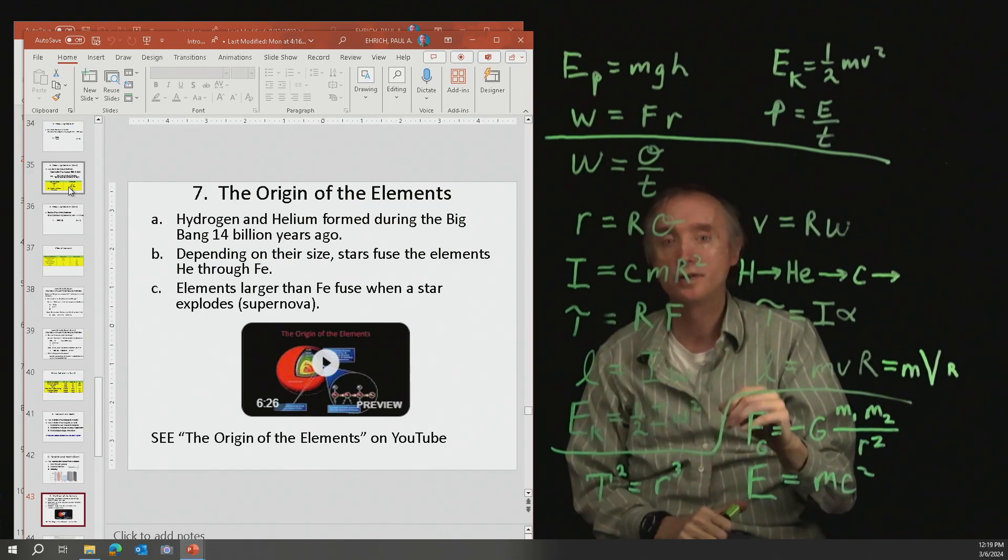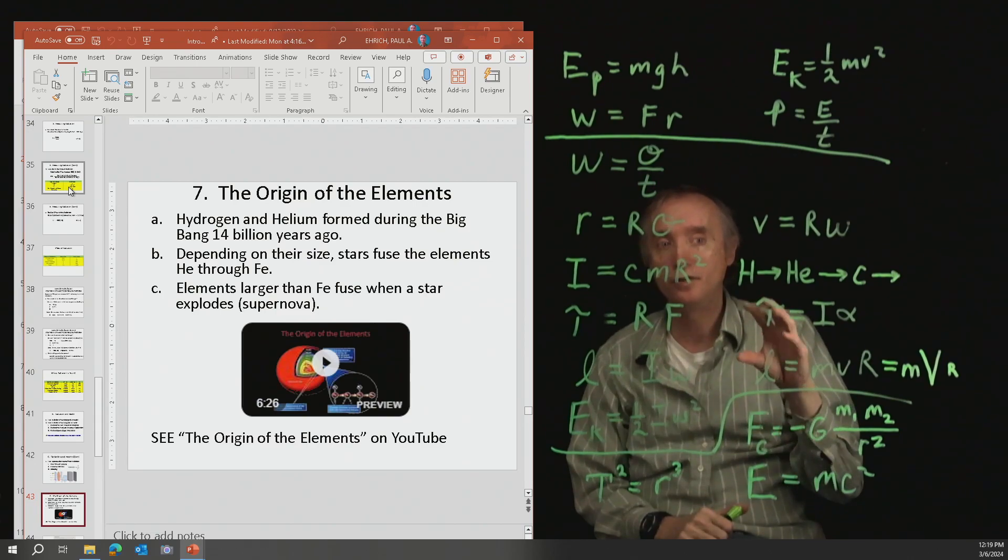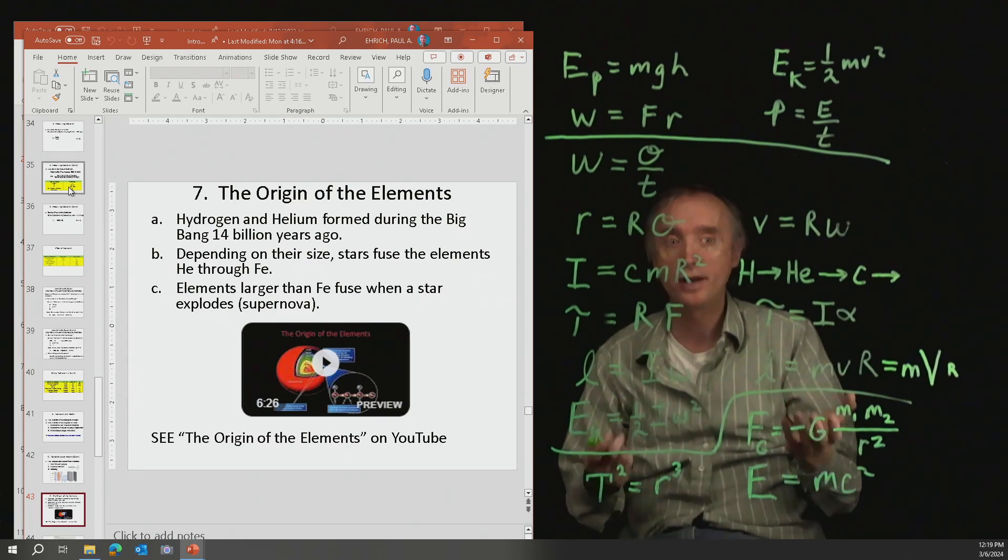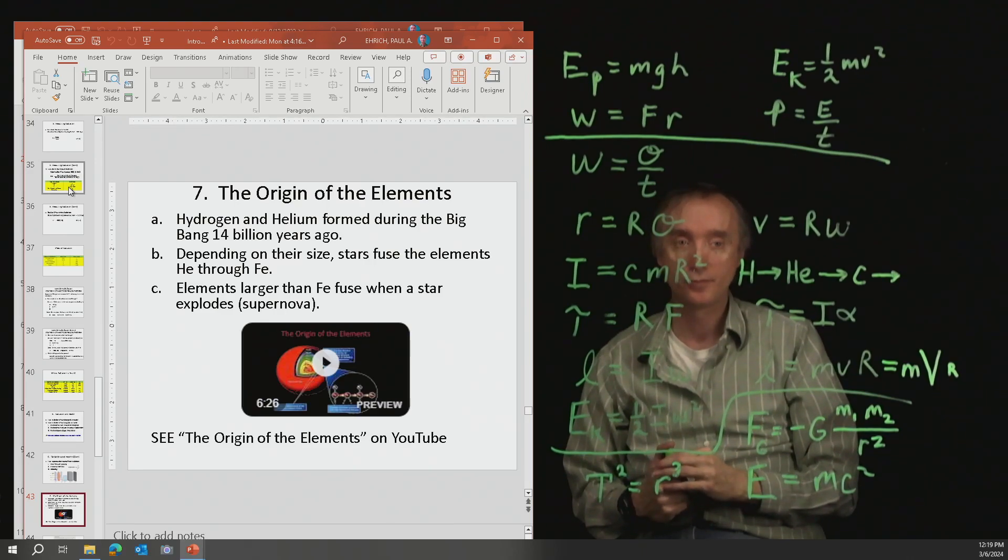And that supernova is going to generate so much energy, it will be able to fuse even larger elements in the periodic table, like uranium, for example.